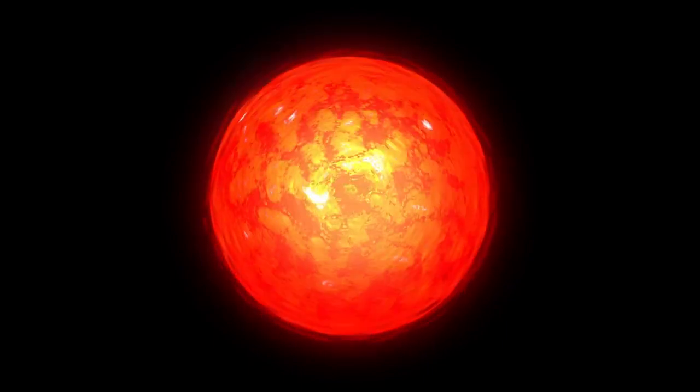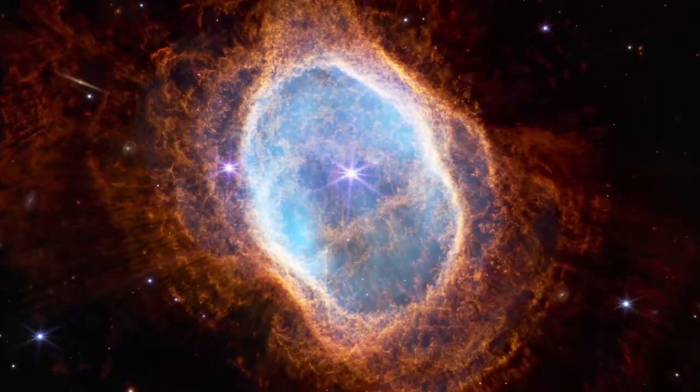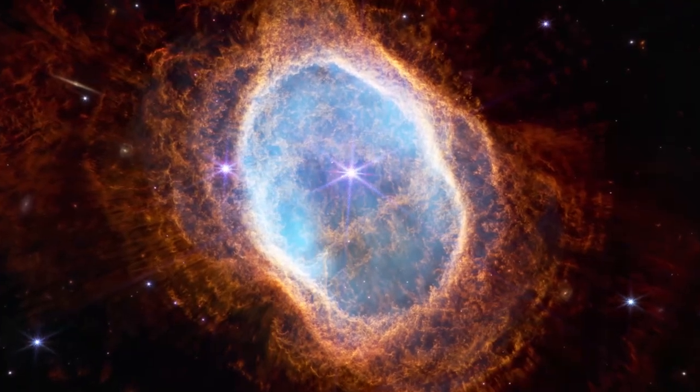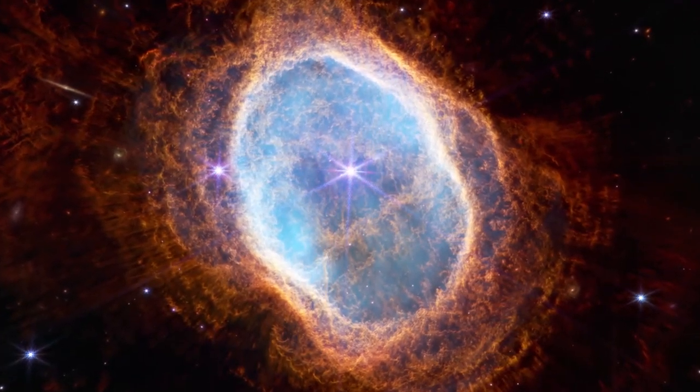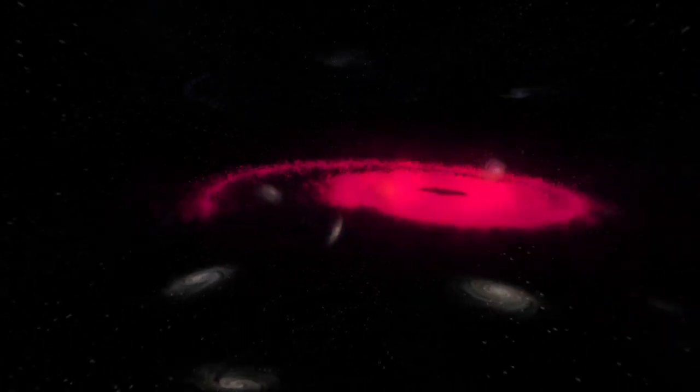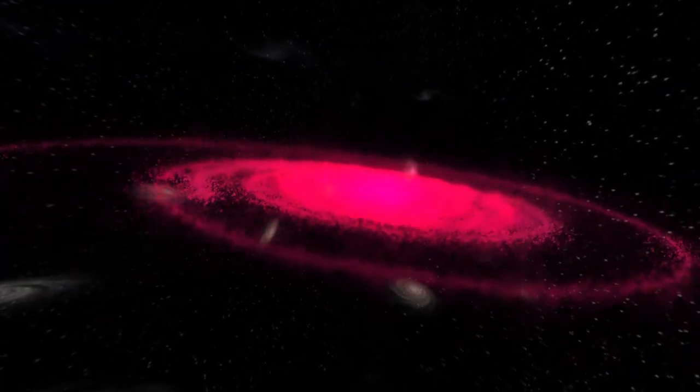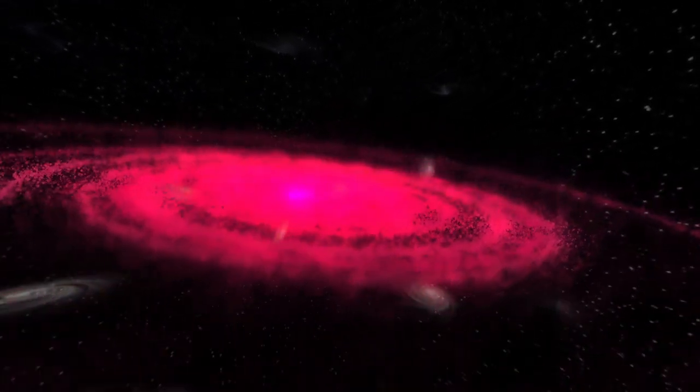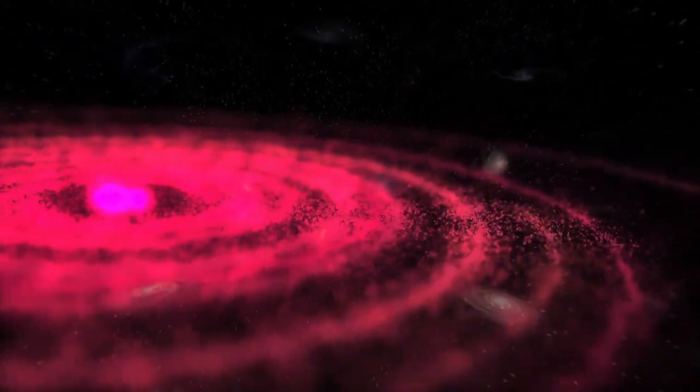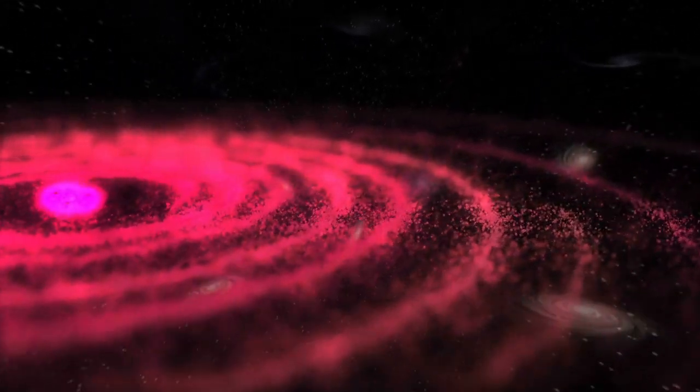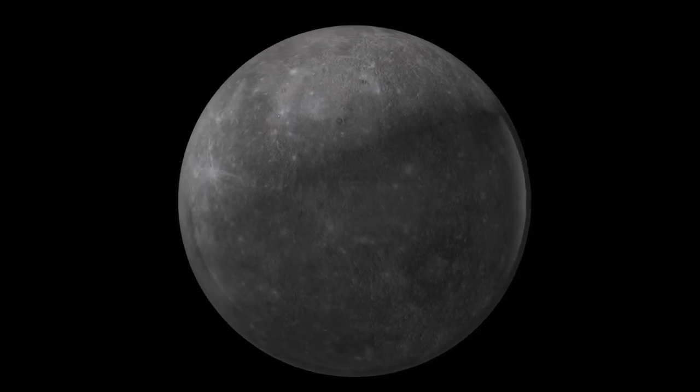In the latest groundbreaking breakthrough, Betelgeuse startled astronomers and celestial observers around the globe with a sudden and striking change in its appearance. Infamously dubbed the Great Dimming at the end of 2019, the red supergiant star, one of the brightest in the night sky and a well-known feature of the Orion constellation, began to dim mysteriously.